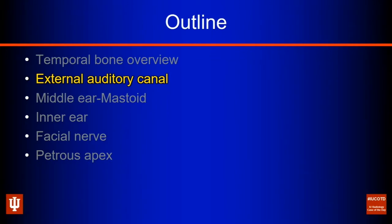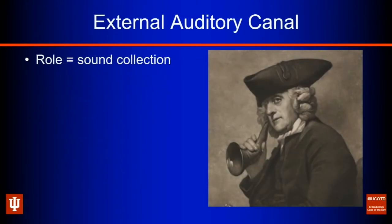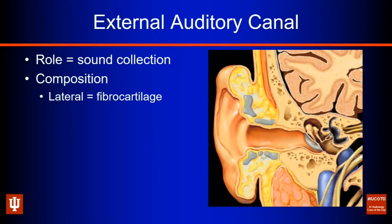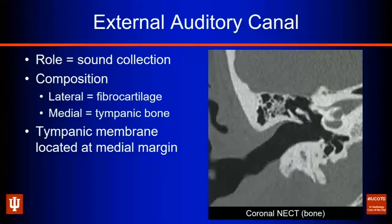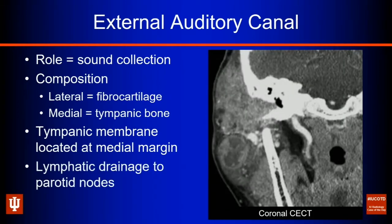Now we'll talk about the external auditory canal. The primary function of the EAC is sound conduction. Laterally it's composed of fibrocartilage; more medially it's composed of the tympanic bone; and at the very medial margin we have the tympanic membrane. On coronal CT, we see the lateral fibrocartilage, the medial bony segment, and then the tympanic membrane, almost imperceptible at the medial margin. It's important to note the lymphatic drainage of the EAC — the primary nodal drainage is to the parotid glands and intraparotid lymph nodes, as seen in this case of a large fungating EAC squamous cell carcinoma with a necrotic metastasis to an intraparotid lymph node.